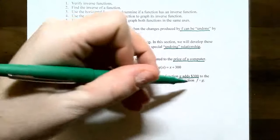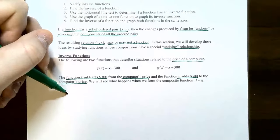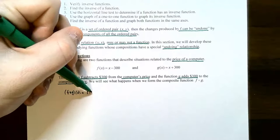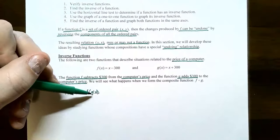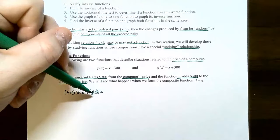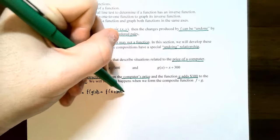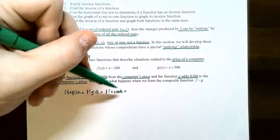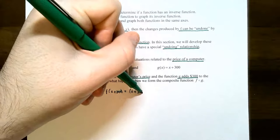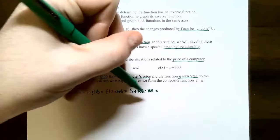We're going to find out what happens when you form the composite function f composed with g. This is f of g of x, where g is the inside function and f is the outside function. To find this composite, you take g of x, which is x plus 300, and substitute it into f. So you replace x in f with x plus 300, and then subtract 300.